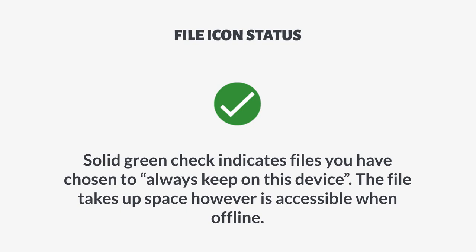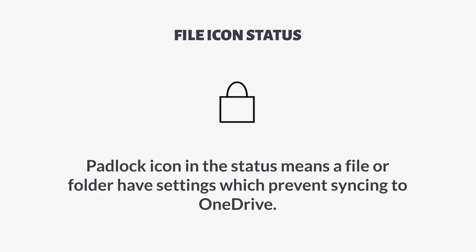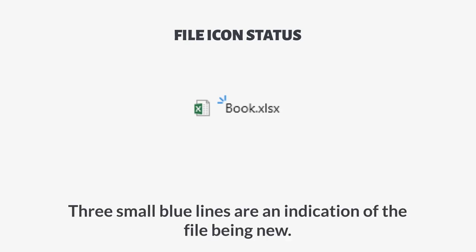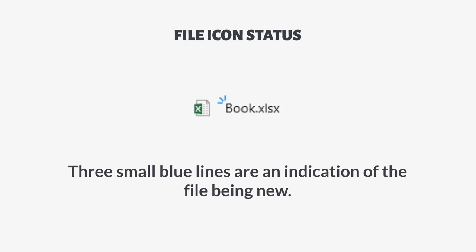These files take up space, however, are accessible when offline. A padlock icon in the status means a file or folder has settings which prevent it from syncing to OneDrive. Three small blue lines on top of a file indicate that the file or folder is new.